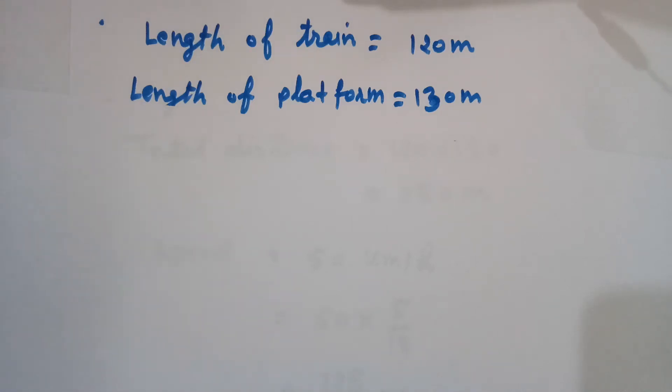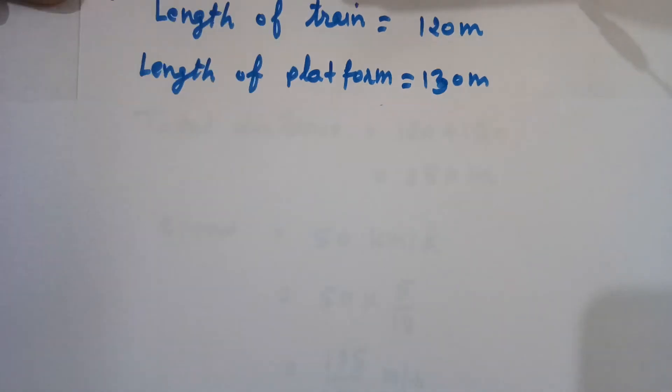Students, here's the question: the length of the train is 120 meters and the length of the platform is 130 meters. We need to find the time taken to cross this platform by the train if the speed of the train is 50 kilometers per hour. So we need to find the time taken.